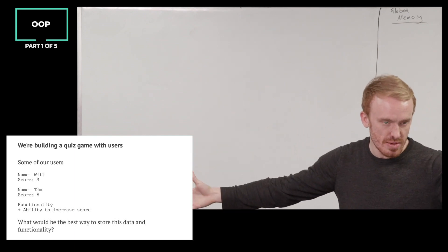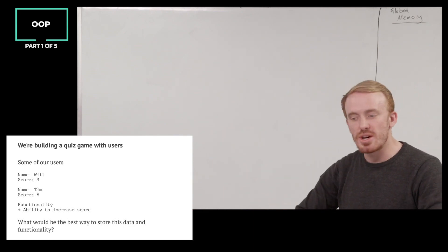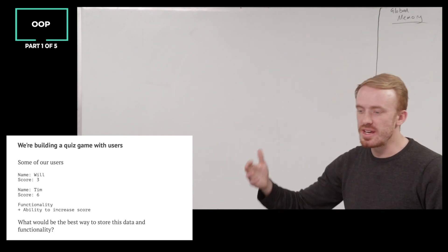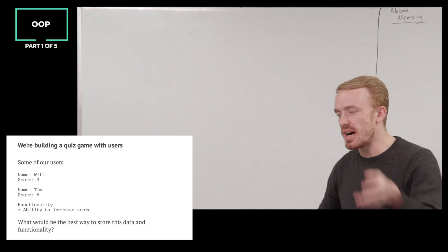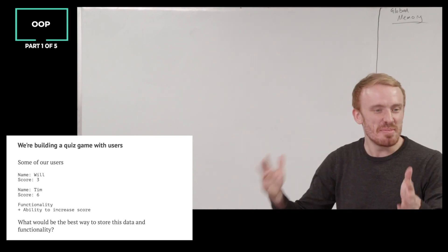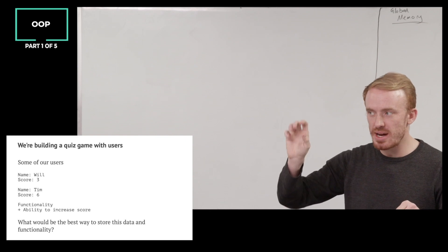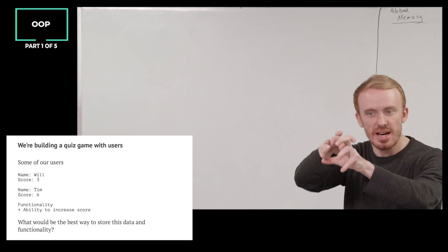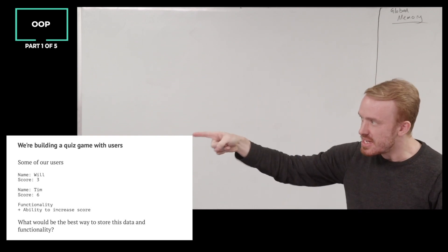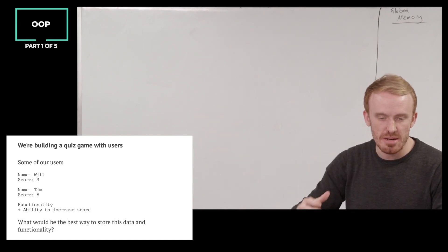And a ton of functionality that can be applied to each of these users. Here we've only got the ability to increase score. But we could have, you know, log in, log out, change avatar, add avatar, delete avatar, delete profile, you know, hundreds of different pieces of functionality. But every single user, remember I said code is about, writing code is about writing functionality to apply to data.